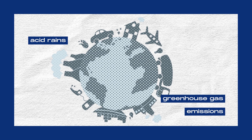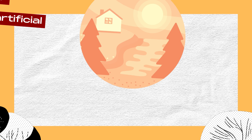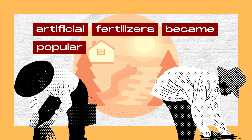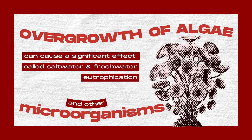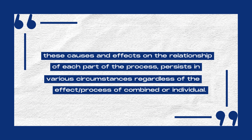Other than nitrogen gas, high quantities of atmospheric nitrogen are linked to adverse outcomes, such as the creation of acid rain and greenhouse gas emissions. Also, since nitrogen is a limiting nutrient, artificial fertilizers containing nitrogen became popular and are used in agriculture. These may be washed through surfaces, running off into lakes, rivers, and streams. This runoff can cause a significant effect called saltwater and freshwater eutrophication, which causes the overgrowth of algae and other microorganisms. Despite these overwhelming causes and effects, the nitrogen cycle persists in various circumstances regardless of the effect of its combined or individually evaluated parts.